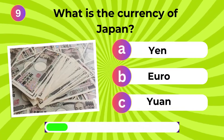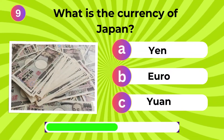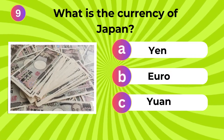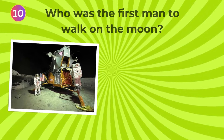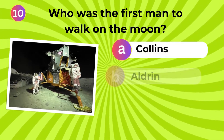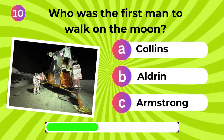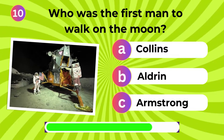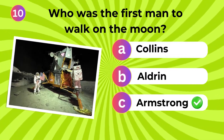What is the currency of Japan? Yen. Who was the first man to walk on the moon? Armstrong.